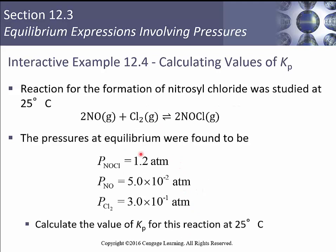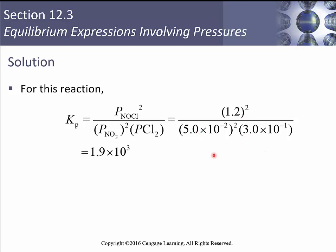And you'll end up with a value of 1.9 times 10 to the third. The fact that this has a very large K value indicates that we favor the product strongly.